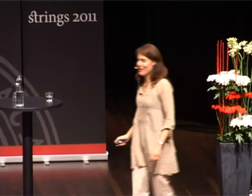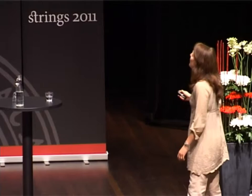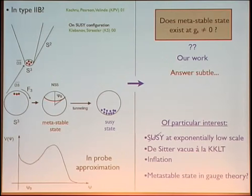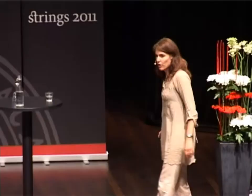Before getting into the technicalities, let me give more motivation to study this type IIb metastable state. From the phenomenological point of view, if supersymmetry would be broken at an exponentially low scale, these anti-D3 branes are a main ingredient in constructing the KKLT landscape vacua, and they were also used for inflation. From the pure gauge theory point of view, there is even the question of whether the gauge theory corresponding to Klebanov-Strassler has metastable vacua — people have failed in their attempts to find this metastable state.